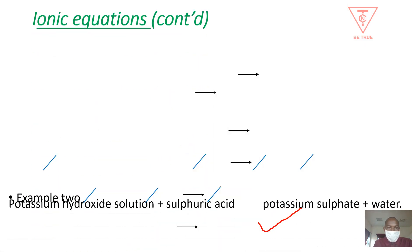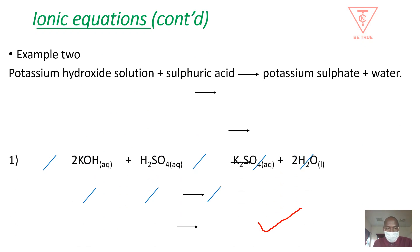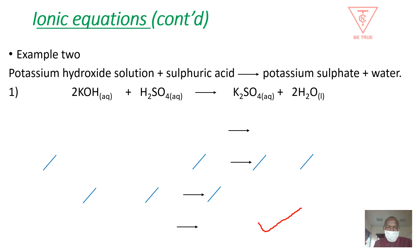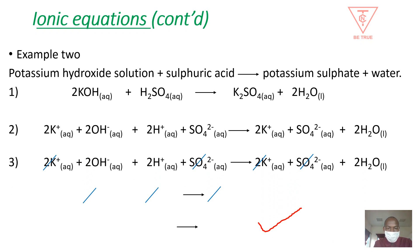Let's have another example: potassium hydroxide solution reacting with dilute sulfuric acid to produce potassium sulfate and water. Step one: write the molecular equation — check that it is well balanced and each formula is correctly written. Step two: rewrite the equation, breaking all ionic substances into ions as shown in equation two. Step three: cross out any ion appearing on both sides — the potassium ion and the sulfate ion are crossed out.